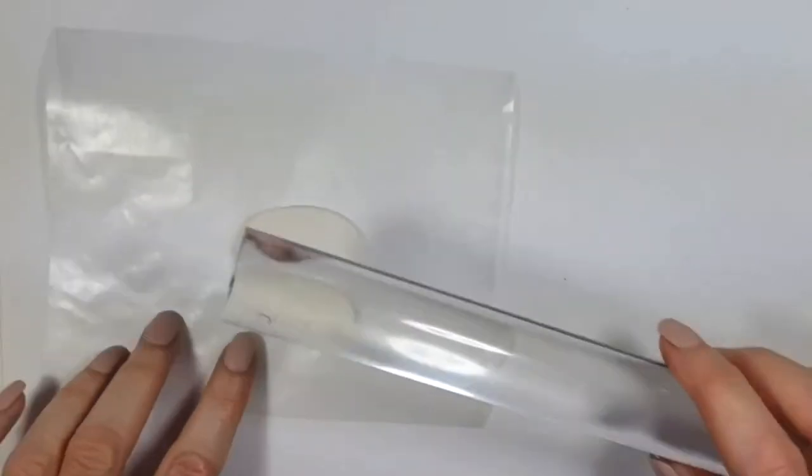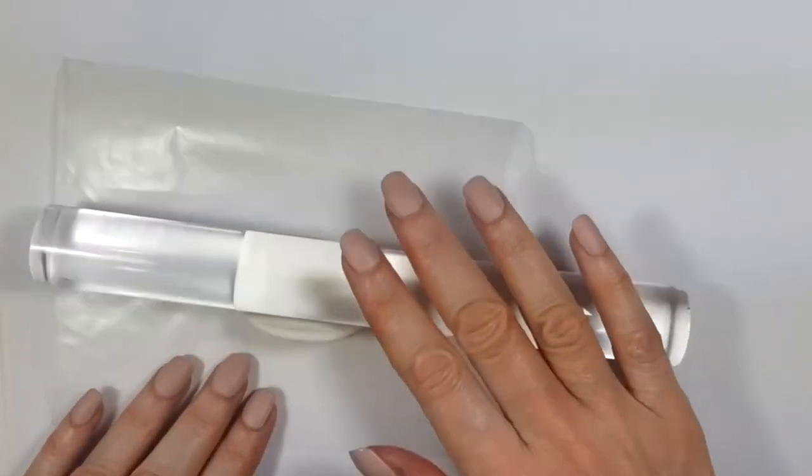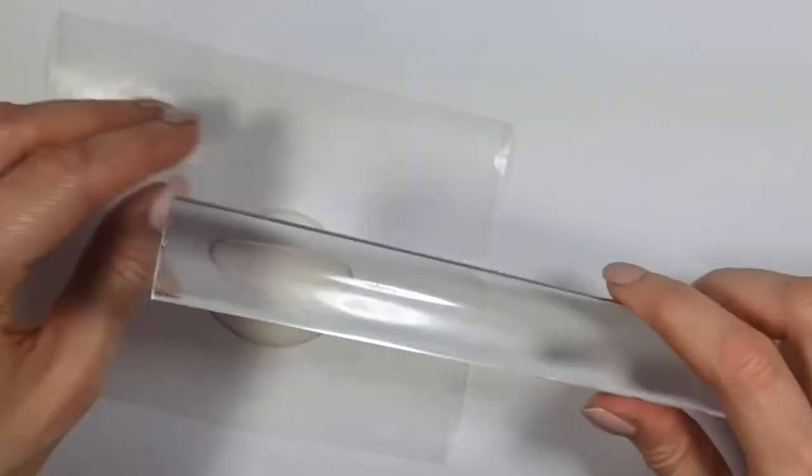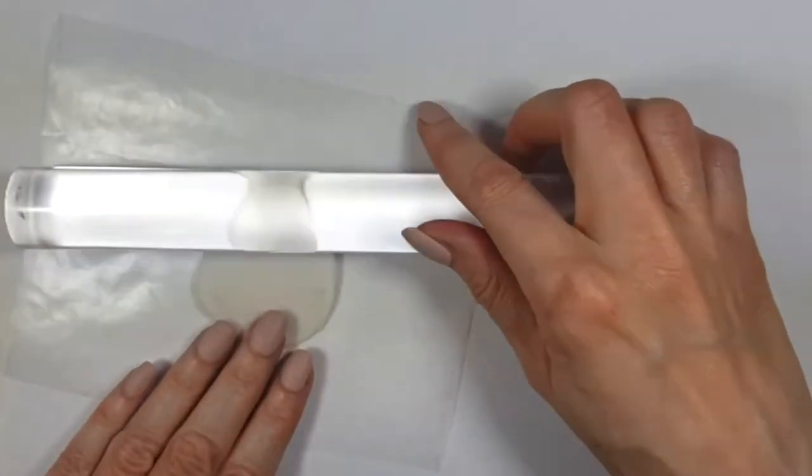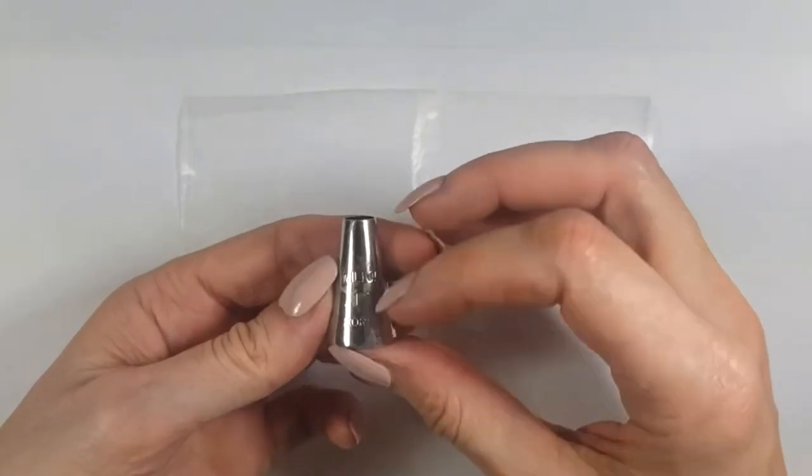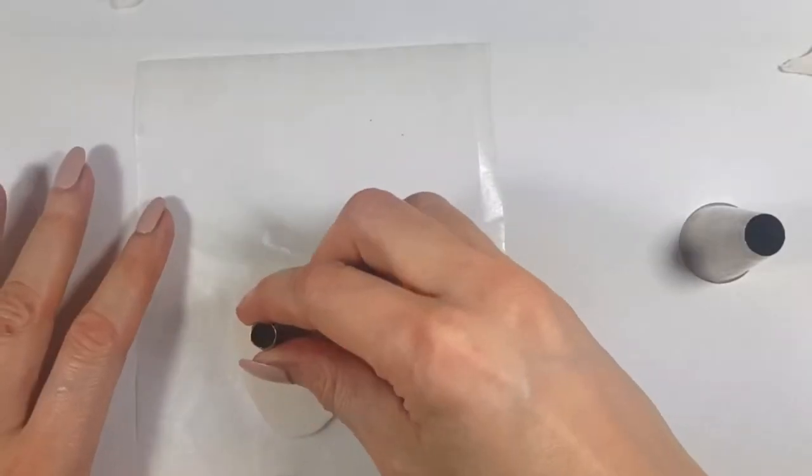I'm going to be using a couple of piping tools for this, and I'm going to clean them after I'm done. I find they have the perfect size to work as a cookie cutter. So I'm just going to be using this Wilton 12 first.